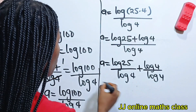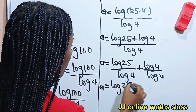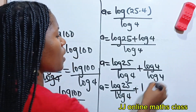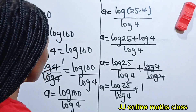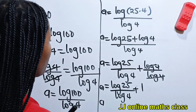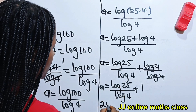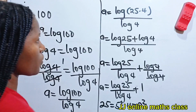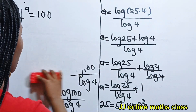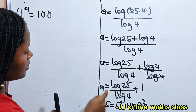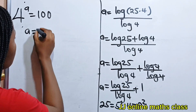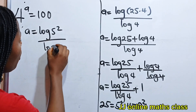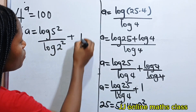So we have A is equal to log 25 divided by log 4 plus 1, because when log 4 divides itself we have 1. Now to simplify this further, recall that 25 is equal to 5 squared and 4 is equal to 2 squared.